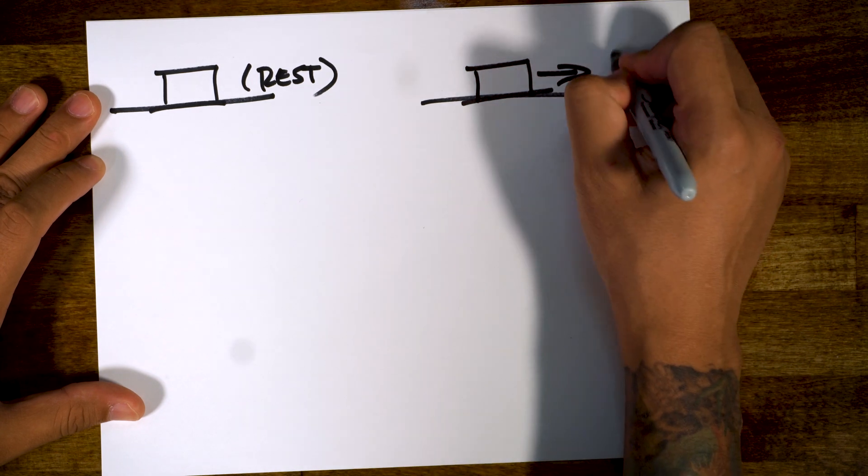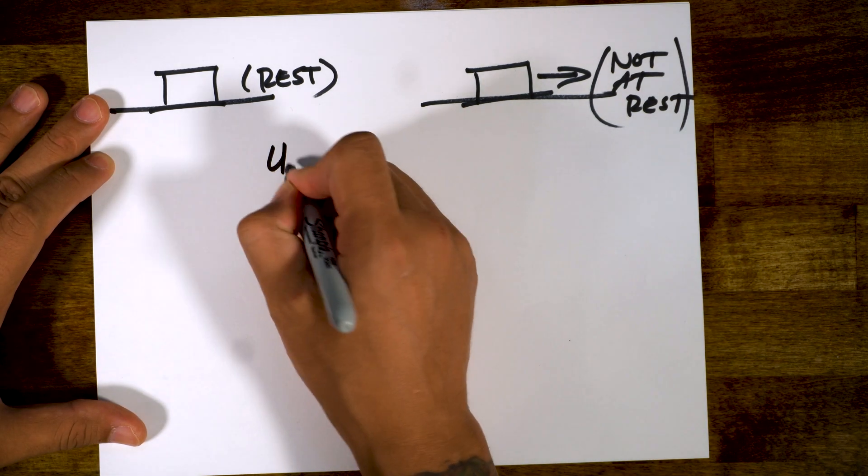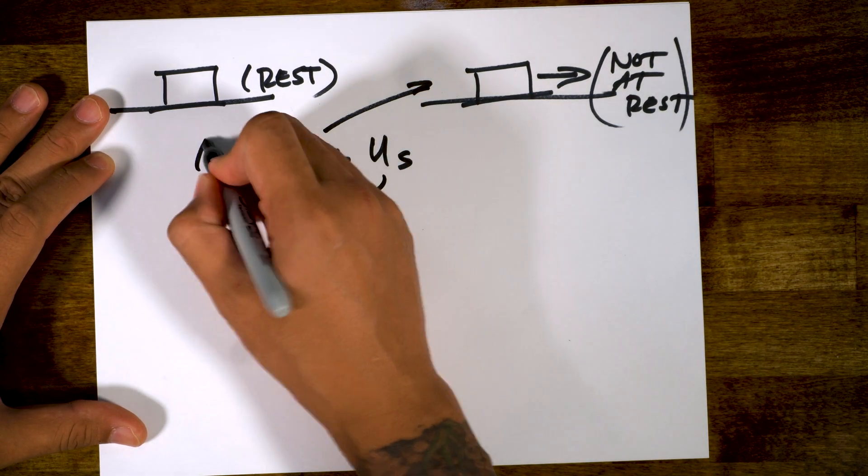This object is moving, so it's not at rest. Pretty easy. Now what we're saying is that the coefficient of kinetic friction is less than or equal to the coefficient of static friction. This one's for this, that one's for that.